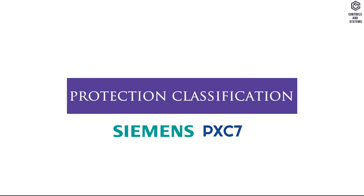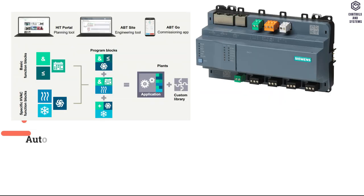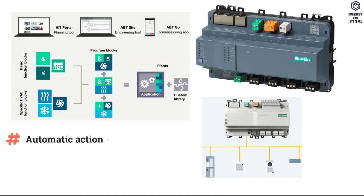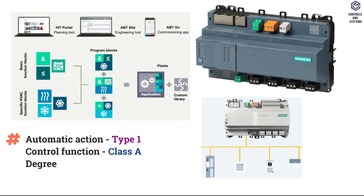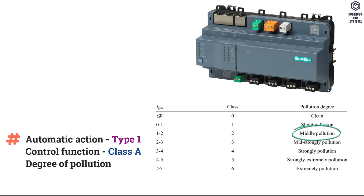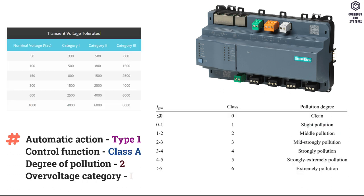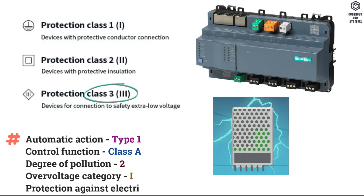Protection Classification: Automatic Action is Type 1, Control Function is Class A, Degree of Pollution is 2, Over Voltage Category — Protection Against Electric Shock is Class 3.